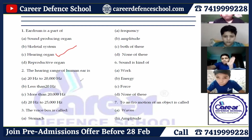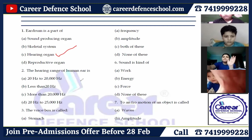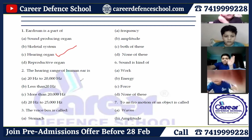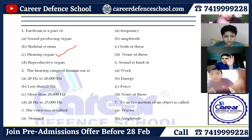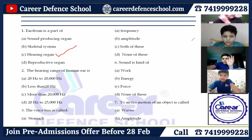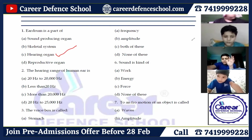Next question: the hearing range of the human ear is — 20 hertz to 20 kilohertz, less than 20 hertz, more than 20 kilohertz, or 20 hertz to 25,000 hertz? Option A, 20 hertz to 20,000 hertz, is correct.